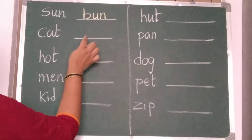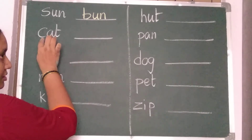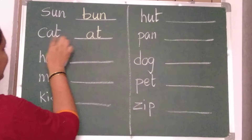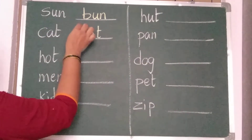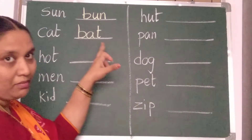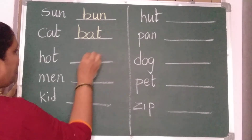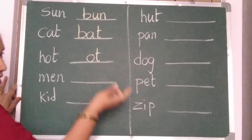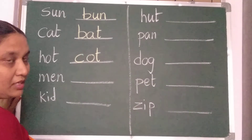C, A, T — cat. You should not write C. Write A, T first — the last two letters. Then instead of C, write another letter like B. So what does it become? Bat. Again, O, T — write O, T first. Instead of H, what can you write? C. So what does it become? Cot.